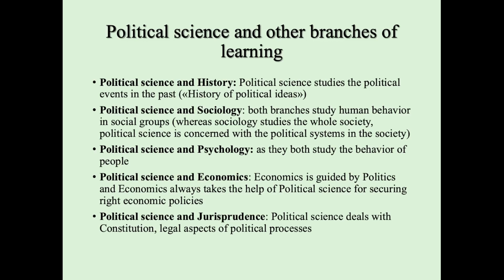Political science and history: political science studies political events in the past, and we have a special part called the history of political ideas. Political science and sociology: both branches study human behavior in social groups. Whereas sociology studies the whole society, political science is connected with the political systems within society.